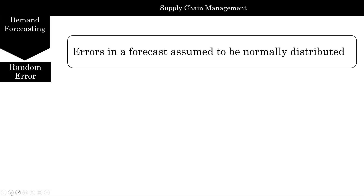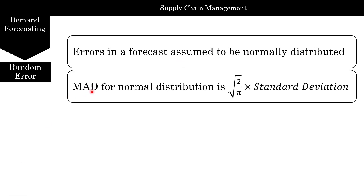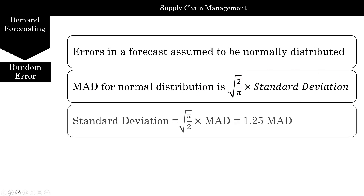Errors in the forecast are assumed to be normally distributed, and the MAD for a normal distribution gives a standard deviation of approximately 1.25 times MAD. You can use this to build confidence intervals, and I'll talk about this in the next video.